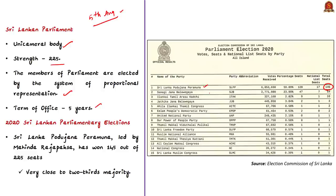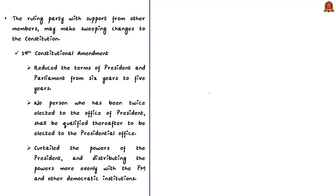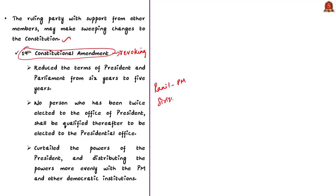The party by itself has not secured a two-thirds majority, but along with its coalition, it has secured nearly two-thirds majority, meaning the new parliament can bring sweeping changes to the constitution. Reports say that one of the main amendments targeted will be revoking the 19th constitutional amendment, which was enacted in 2015 when Ranil Wickremesinghe was prime minister and Maithripala Sirisena was president. The 2015 amendment reduced the terms of the president and parliament from six years to five years, and stated that no person elected twice to the office of president shall be qualified again for the presidential office. This is why Mahinda Rajapaksa — who held the presidential office twice from 2005 to January 2015 — can currently only be prime minister. The 19th amendment curtailed the powers of the president and distributed powers more evenly with the prime minister and democratic institutions.